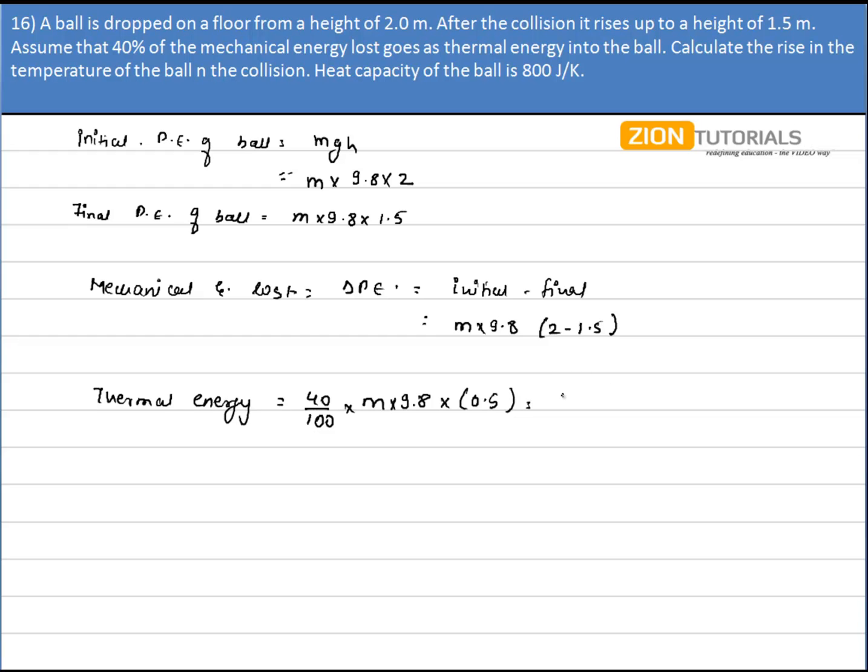The thermal energy is given by MC delta T. Now mass cancels from both sides. I know the specific heat and I have to calculate the rise in temperature. The rise in temperature or change in temperature is one and the same thing.